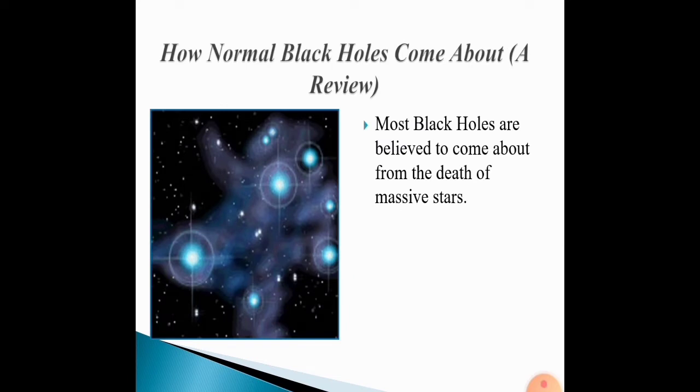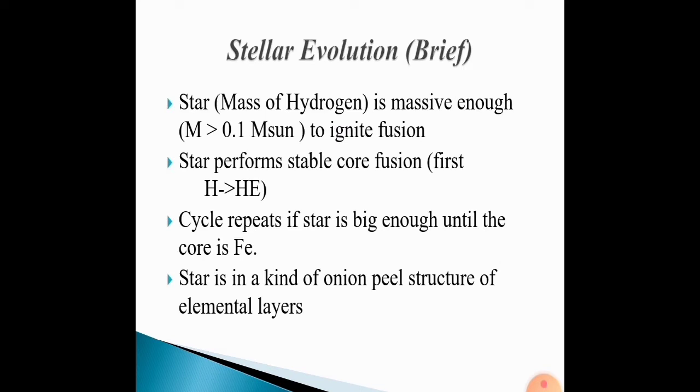How normal black holes come about. Most black holes are believed to come about from the death of massive stars. Stellar evolution: star mass of hydrogen is massive enough to ignite fusion. Star performs stable core fusion. Cycle repeats if star is big enough until the core is iron. Star is in a kind of onion peel structure of elemental layers.